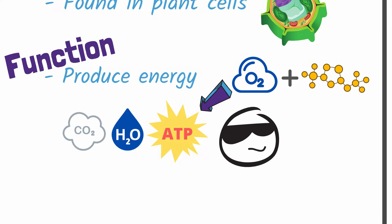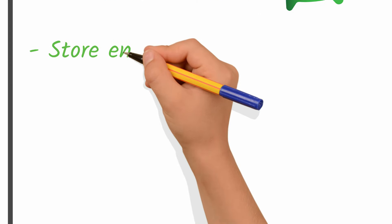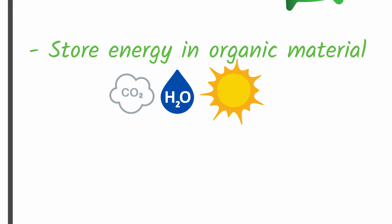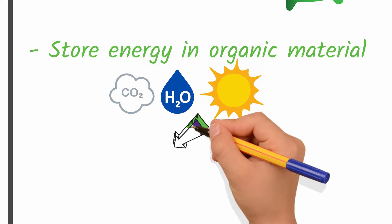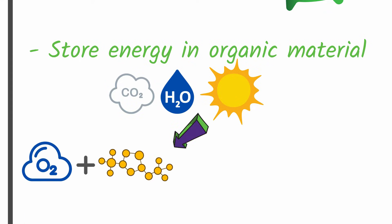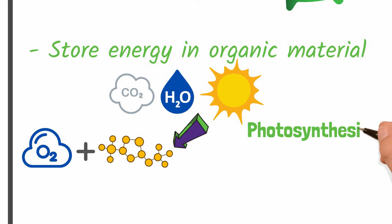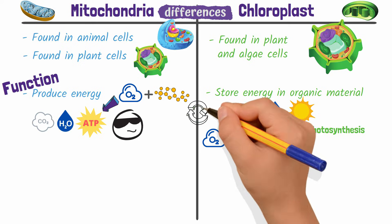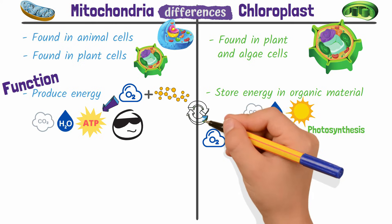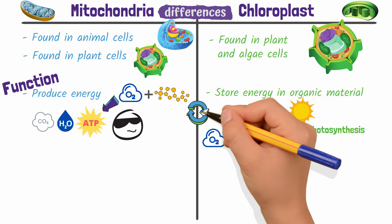Chloroplasts, on the other hand, store energy in organic material by taking in carbon dioxide, water, and energy from the sun to produce oxygen and carbohydrates. This is the photosynthesis process. So essentially their functions are completely opposite, yet complementary.